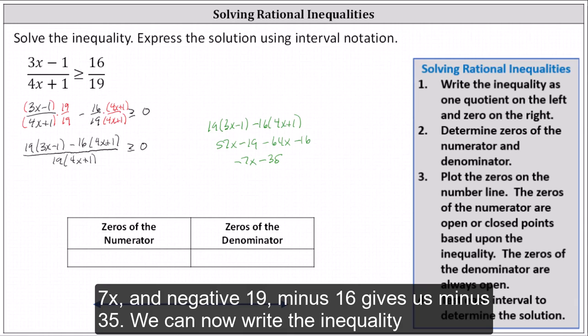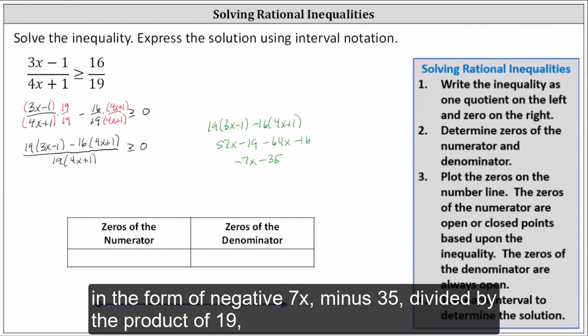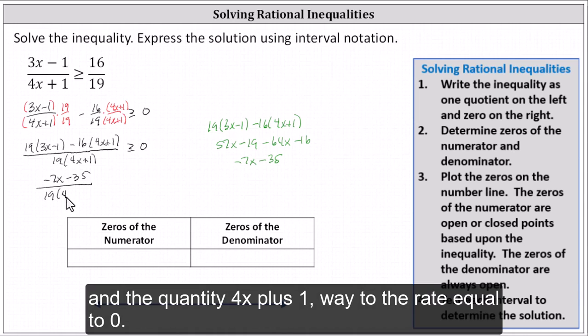We can now write the inequality in the form of (-7x - 35) divided by the product of 19 and the quantity (4x + 1), greater than or equal to zero.